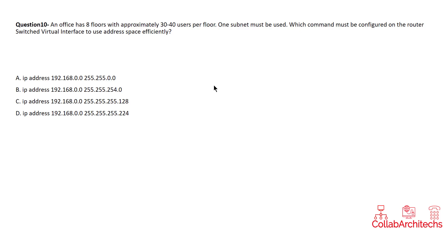We have four options. Option A: IP address 192.168.0.0 255.255.0.0. Option B: IP address 192.168.0.0 255.255.254.0. Option C: IP address 192.168.0.0 255.255.255.128. Option D: IP address 192.168.0.0 255.255.255.224.